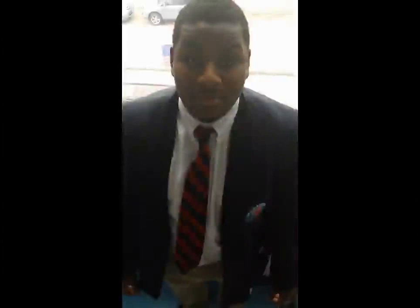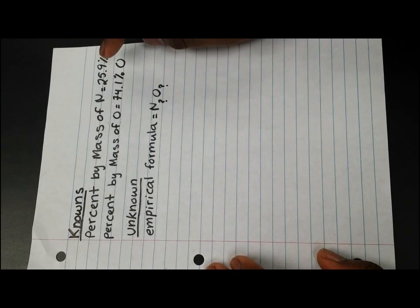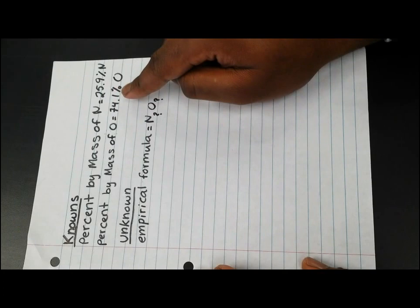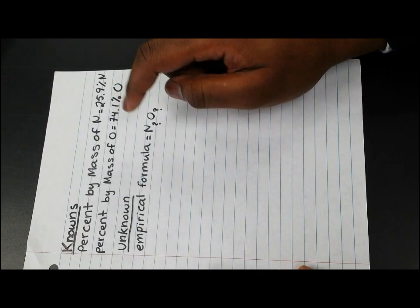What is an empirical formula? An empirical formula is a formula with the lowest whole number ratio of elements in a compound. Our next lesson is determining the empirical formula of a compound. A compound is analyzed and found to contain 25.9% nitrogen and 74.1% oxygen. What is the empirical formula of the compound? Our knowns are 25.9% nitrogen and 74.1% oxygen, and our unknown is the empirical formula for the nitrogen-oxygen compound.